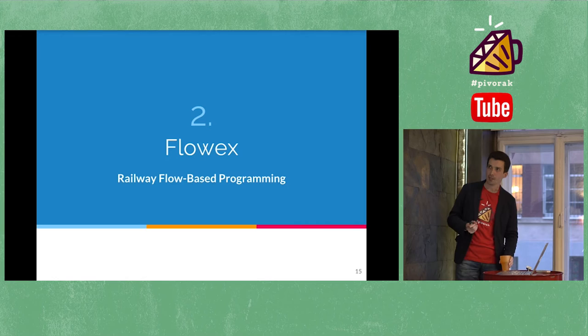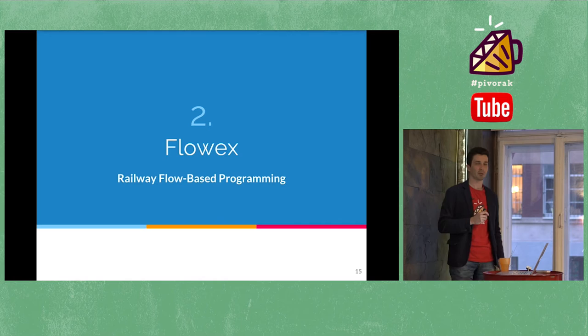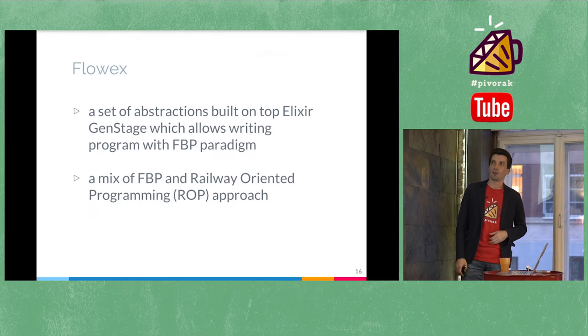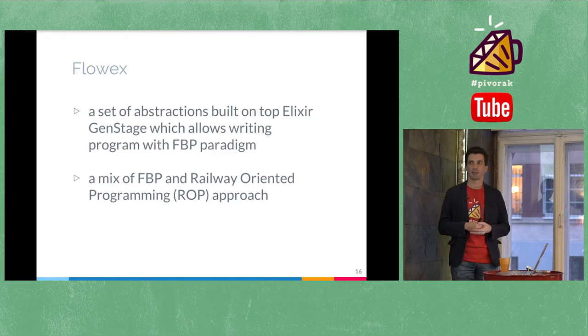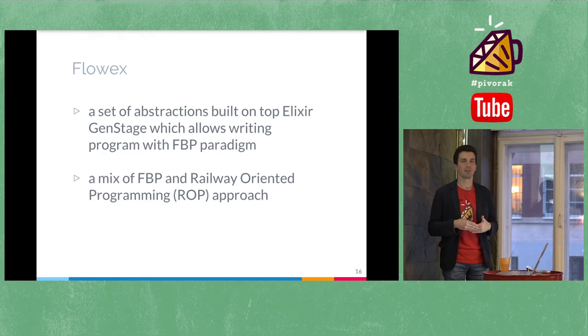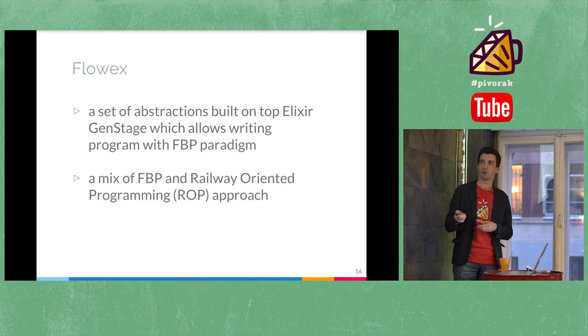So, meet FlowEx — railway flow-based programming. It's not a general case for flow-based programming; it's so-called railway flow-based programming — my own term, nothing scientific. How I define FlowEx: it's a set of abstractions built on top of Elixir GenStage which allows running a program with the FBP paradigm. It's like a mix of flow-based programming and the so-called railway-oriented programming approach.